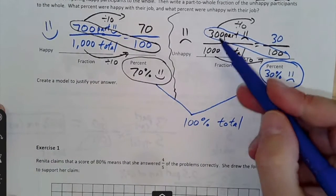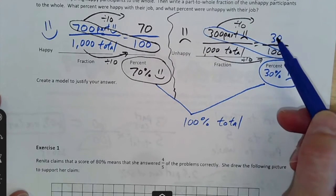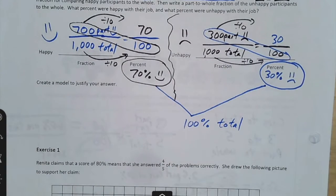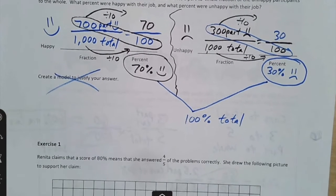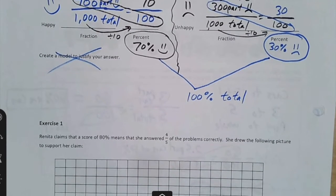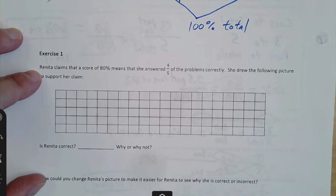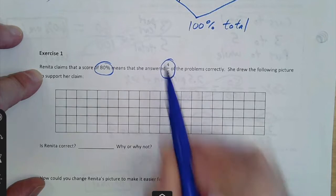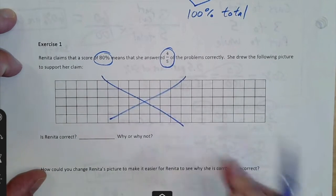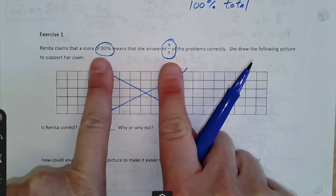So this is a fraction part to whole and our fraction wasn't out of 100. It was actually more than 100, but we could make it a number out of 100. Why did we choose out of 100? Because we wanted to know the percent and a percent is a number out of 100. We're going to skip that model because we did cross-products to show. So, exercise one, this person claims that a score of 80% means that she answered four of the five problems correctly. So she thinks 80% means that she answered four out of five correctly. Is she correct? Why or why not?